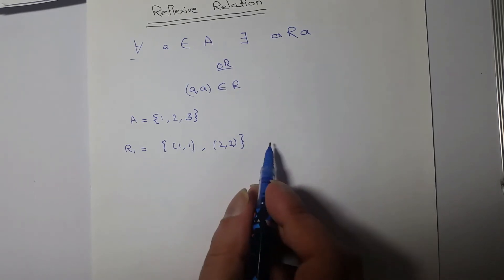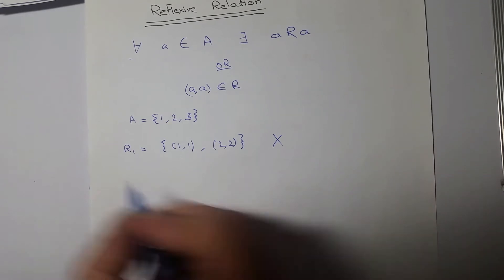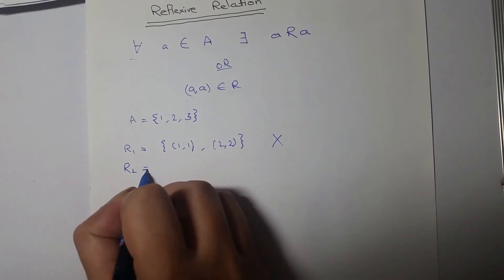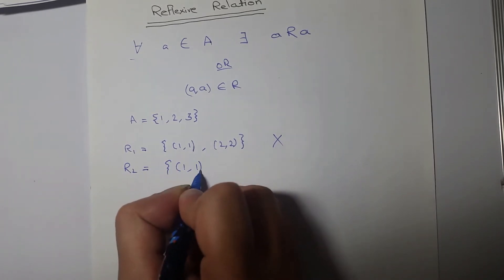Second example: {(1,1), (2,2), (3,3)}. Yes, this is a reflexive relation since every element is related to itself.